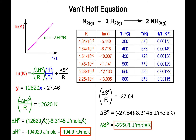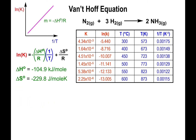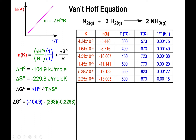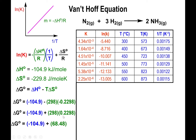For entropy, take the y-intercept and multiply by R. This gives ΔS = negative 229.8 J/mol·K. Now we calculate ΔG using ΔG = ΔH − T·ΔS: ΔH is negative 104.9 kJ/mol, T is 298 K, and ΔS converted to kJ/mol·K is 0.2298. Negative and negative become positive: 298 × 0.2298 = 68.48, added to negative 104.9 gives ΔG = negative 36.4 kJ/mol.